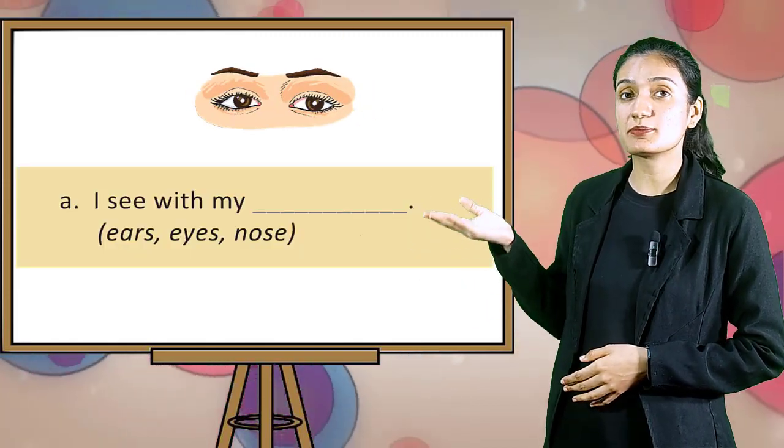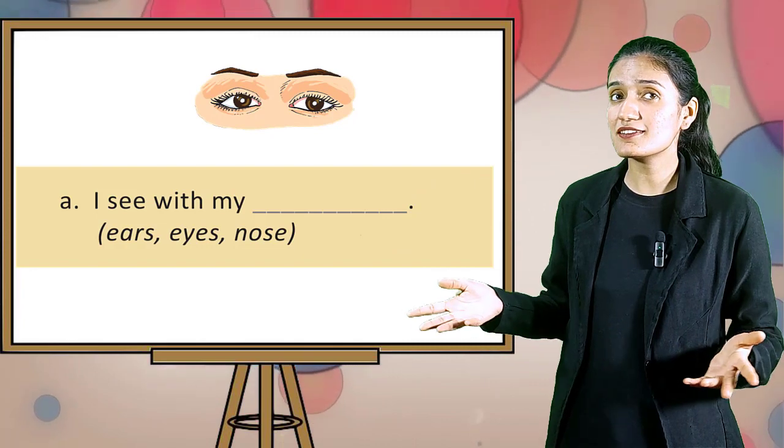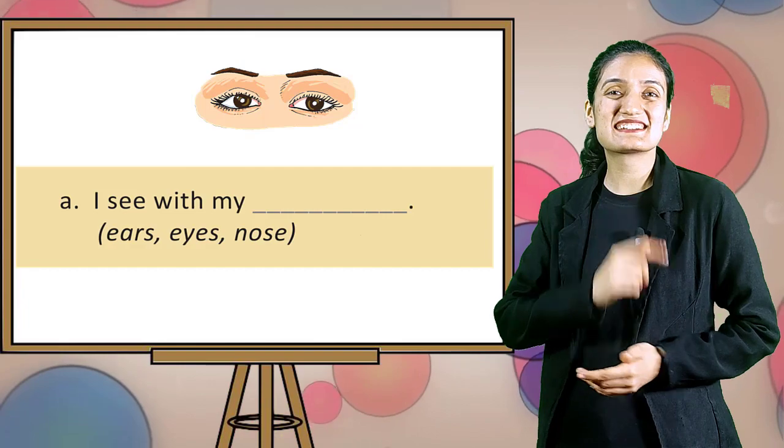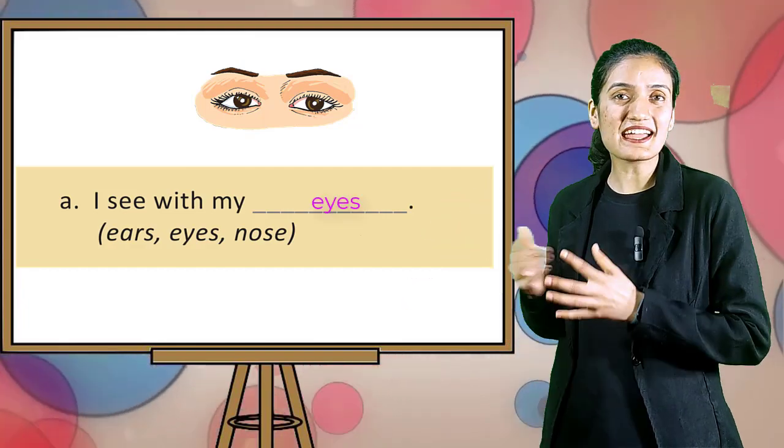A, I see with my dash. So, kids, from which organ do you see? Yes, correct. Very good. It's eyes.